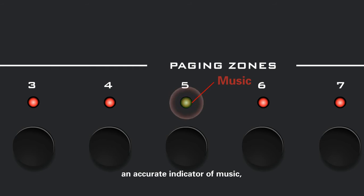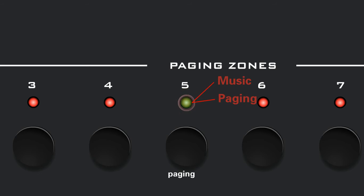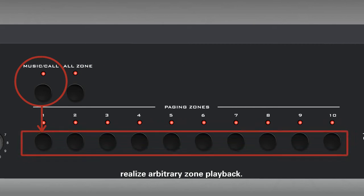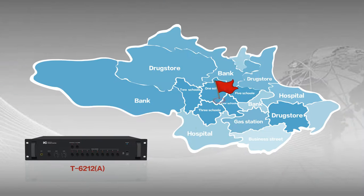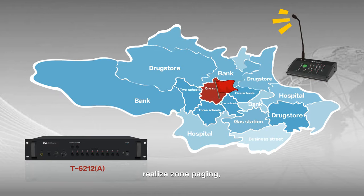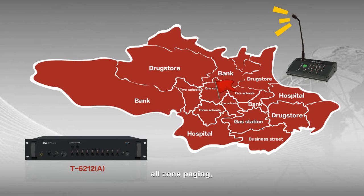An accurate indicator of music, paging, or alarm condition. Music zone play control functions. Realize arbitrary zone play. Local and remote distance 1 km zone paging function — realize zone paging or all-zone paging.